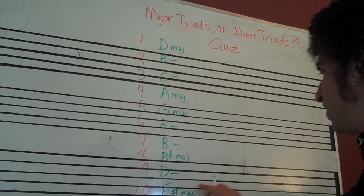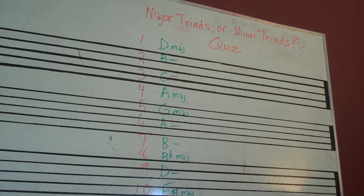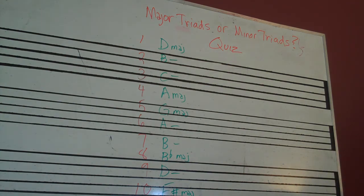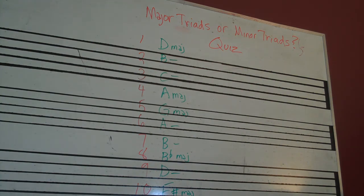It was not a major seven. Hopefully you can see that on your screen. Let me just play them really quick so you can hear them again in context — you might want to play them on piano yourself or even guitar. That's D major. Number two was B minor. C minor. A major. G major. A minor. B minor. B flat major. Number nine, D minor — or I think I played it up here actually. And ten, F sharp major.